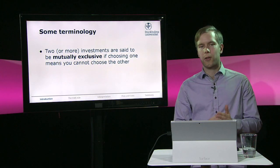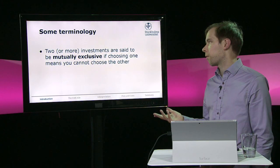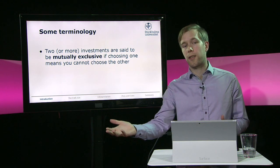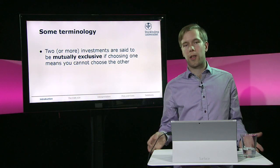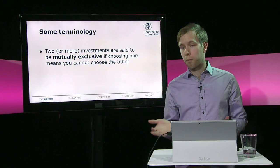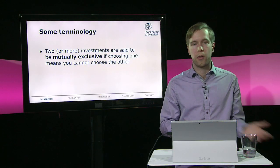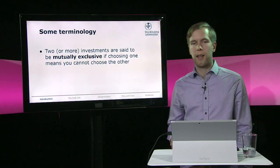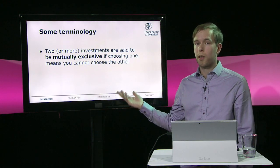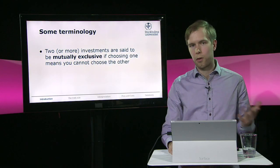Before we start, it could be useful to have a little bit of terminology. When you have two investments and you cannot choose both — so if you choose one, it means you cannot do the other — for example, let's say I'm going to build a house on the ground I own: either I build a big house or a small house. If you have two projects like this where you cannot do both, then they're said to be mutually exclusive.